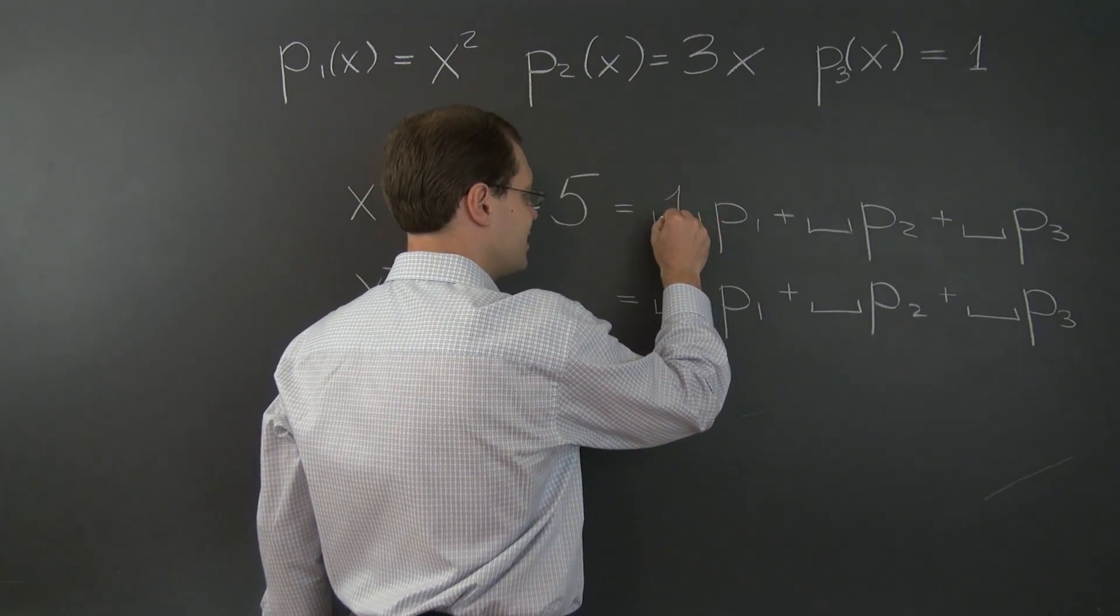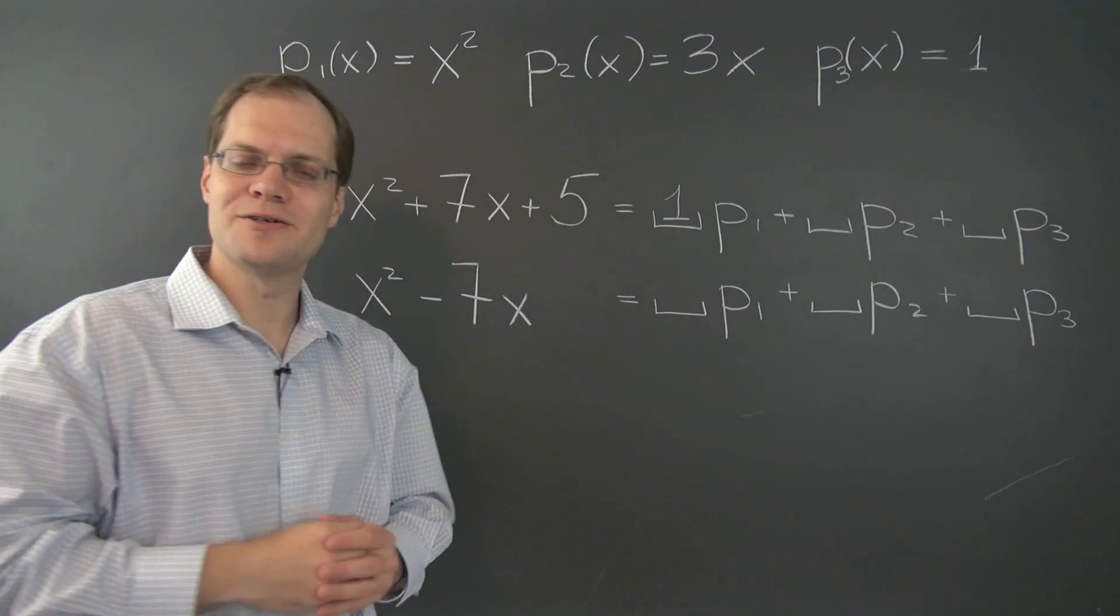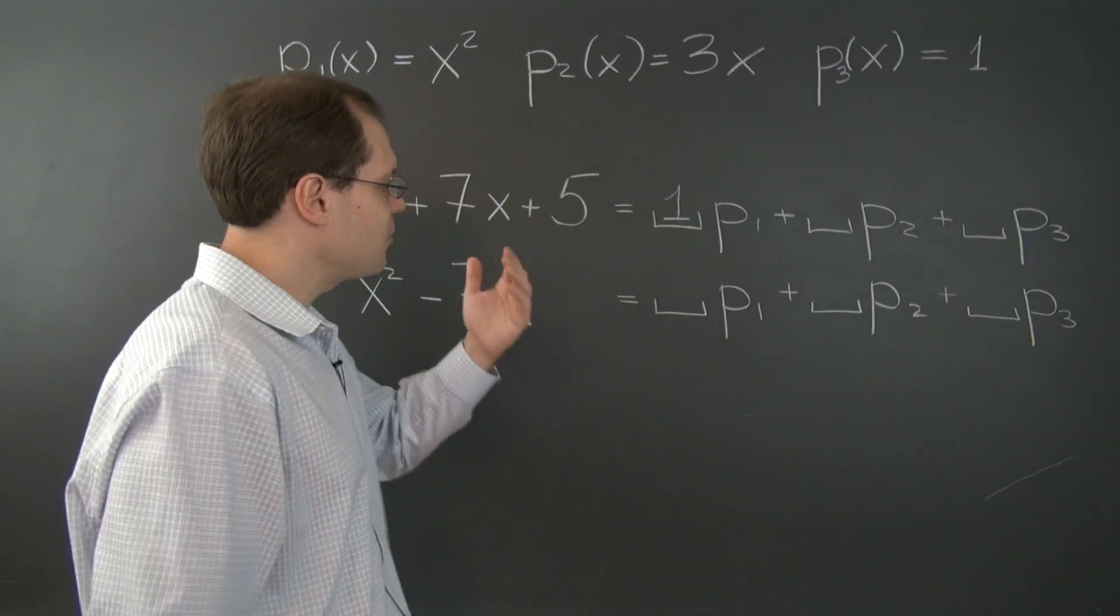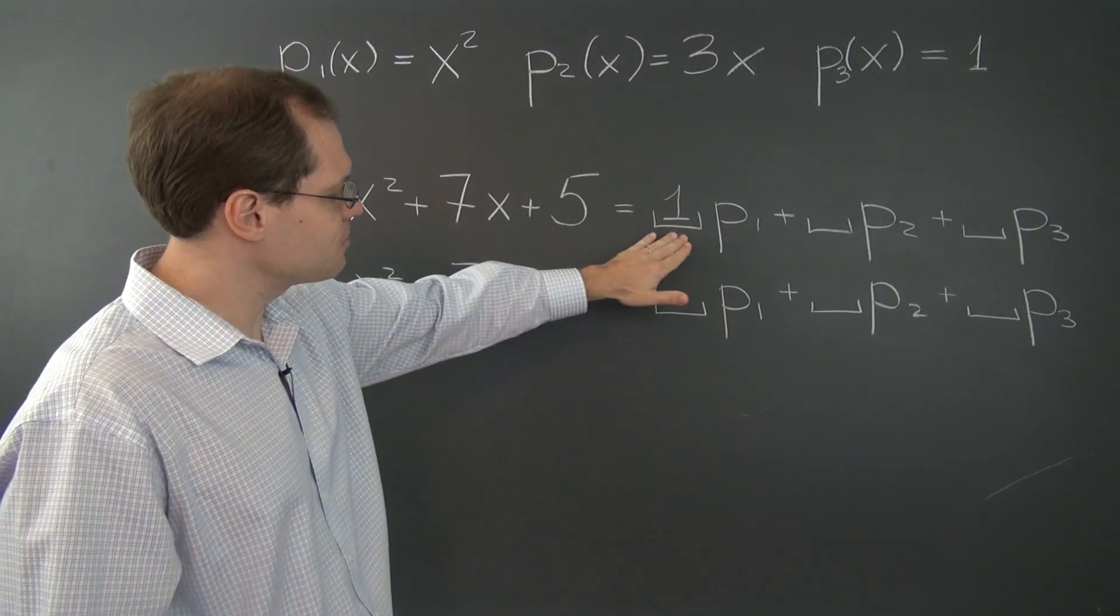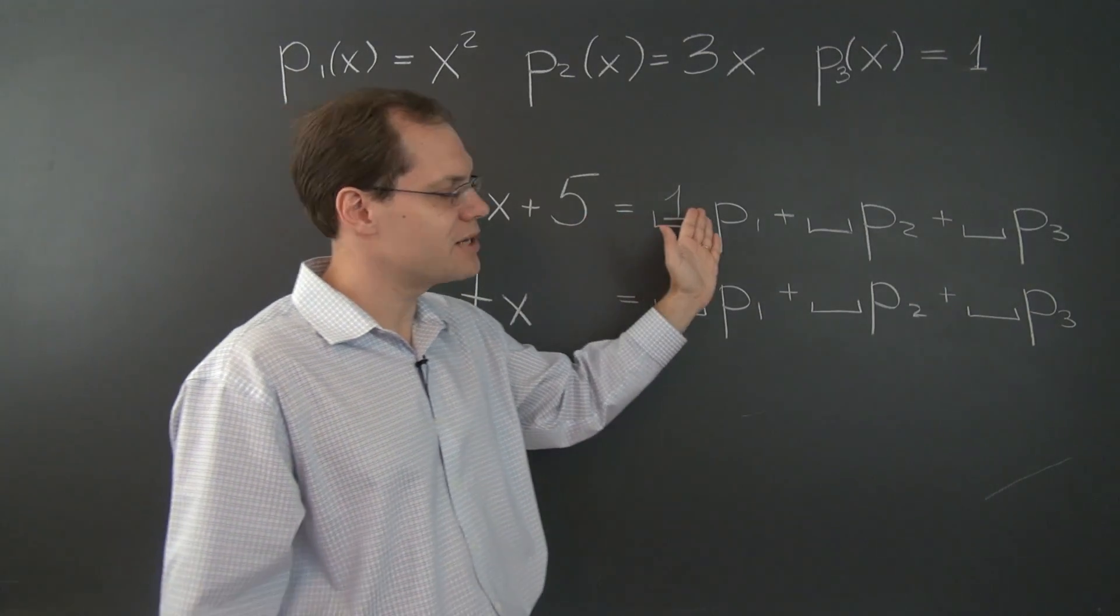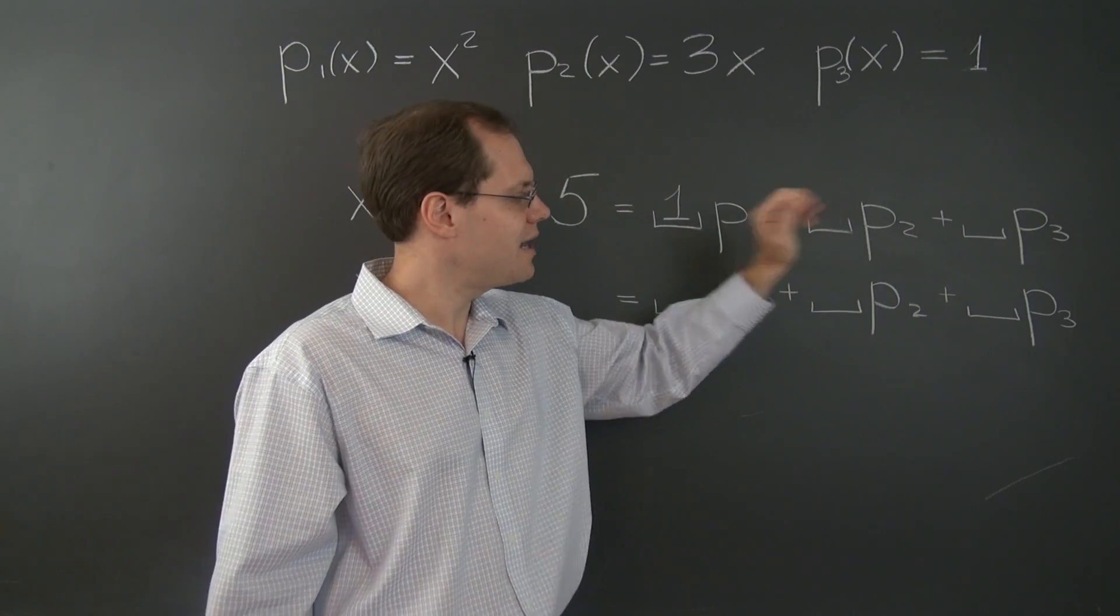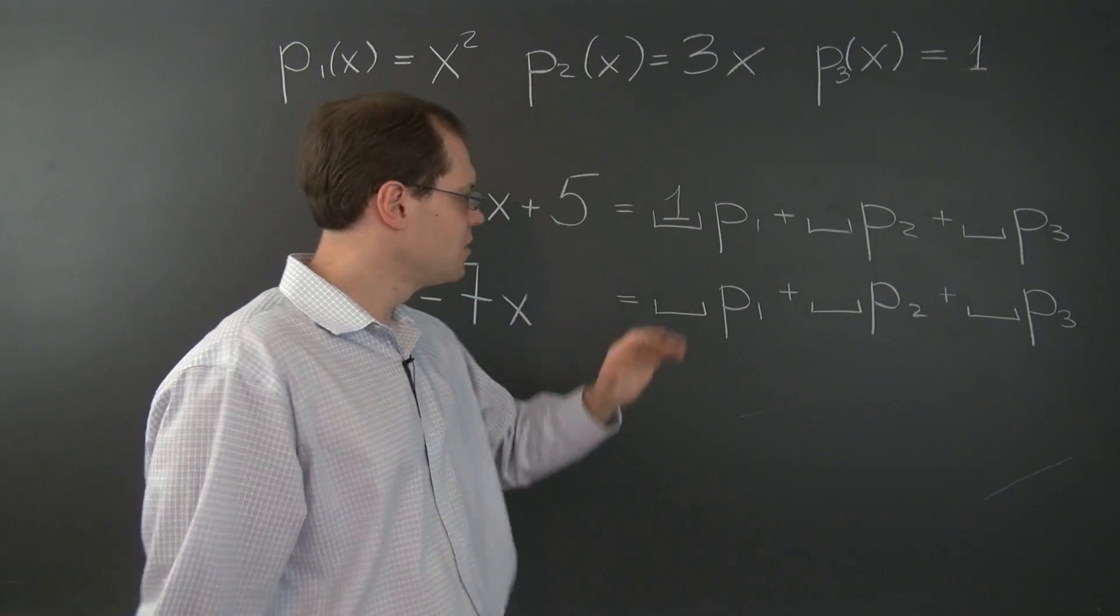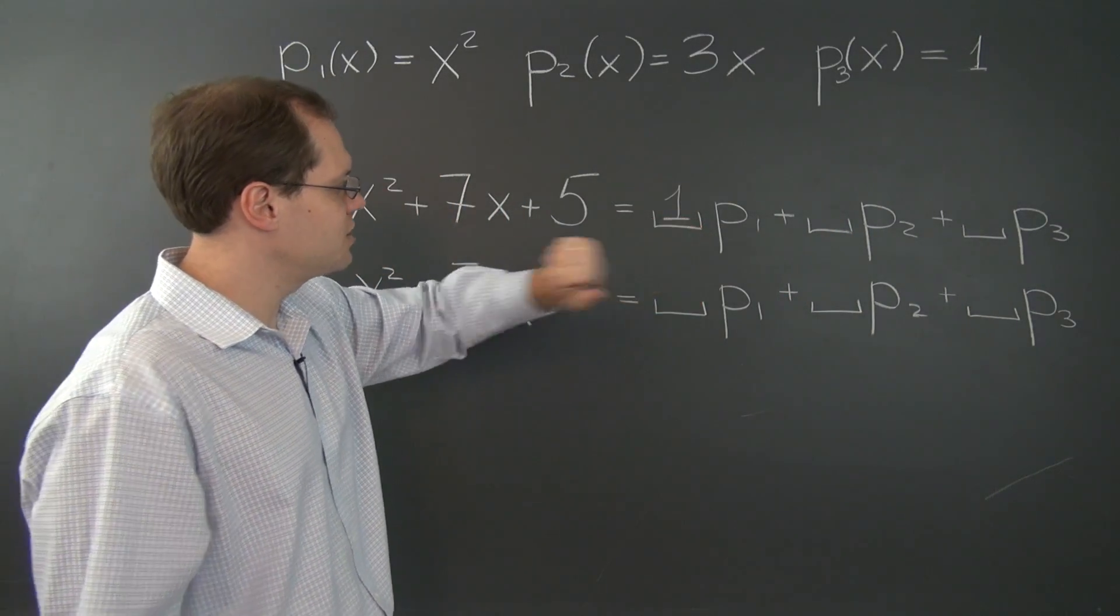So I'm writing a 1 here. And the first coefficient has been determined. Now, because we're solving a decomposition problem, I'm making this one explicit. Otherwise, I would simply write p1 plus and then a certain proportion of p2. But we're making it explicit so this one stays.